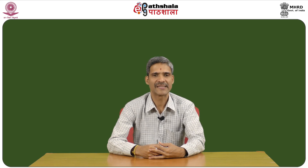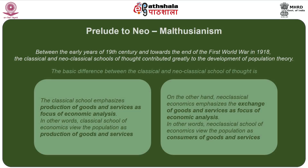Before understanding Neo-Malthusianism — the revised form of Malthus's theory — we should try to understand how population was being considered and what kind of considerations existed with regard to population. Between the early years of the 19th century and towards the end of the First World War in 1918, the Classical and Neo-Classical schools of thought contributed in a big way towards the development of population theory.